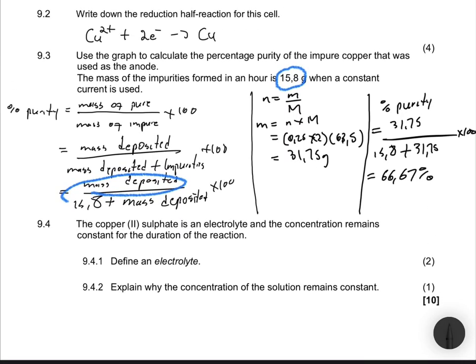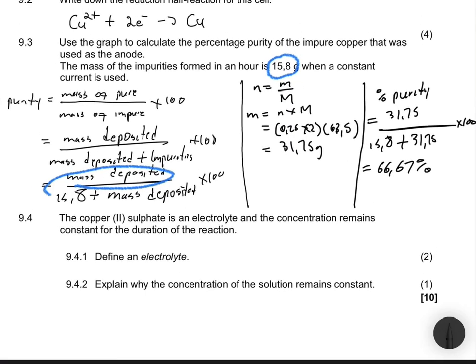Moving to question 9.4: copper sulfate is an electrolyte and its concentration remains constant for the duration of the reaction. Question 9.4.1 asks to define an electrolyte. An electrolyte is a solution that conducts electricity through the movement of ions.